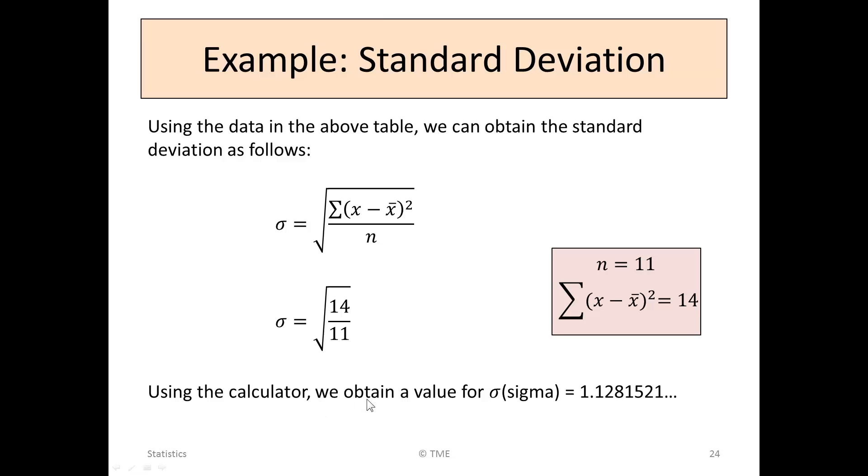So using a calculator, 14 over 11, and then with your answer, hit the square root button, we find that sigma is 1.1281521.